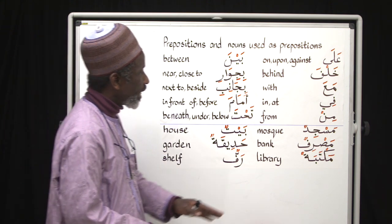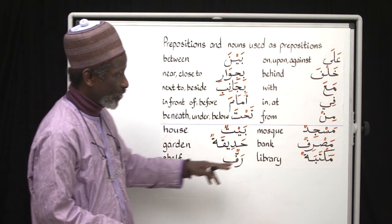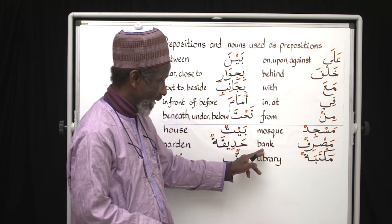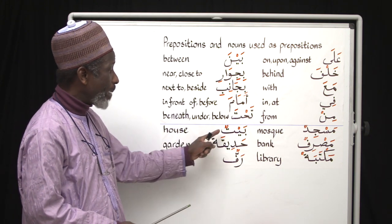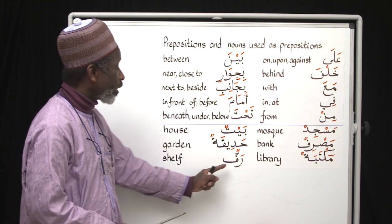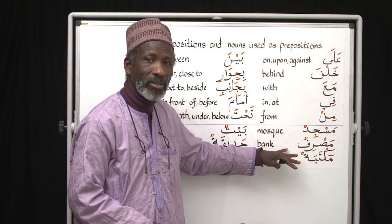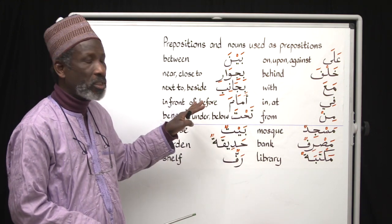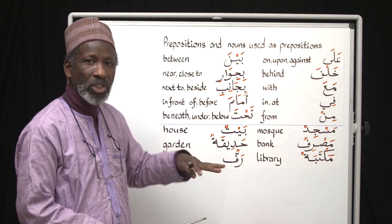We will also be working with some of these nouns: 'masjidun' (a mosque), 'masrifun' (a bank), 'maktabatun' (a library), 'baytun' (a house), 'hadiqatun' (a garden), 'raffun' (a shelf). When we put these into sentences, we will see the effect of placing any of these prepositions before any of these nouns and observe what changes occur.